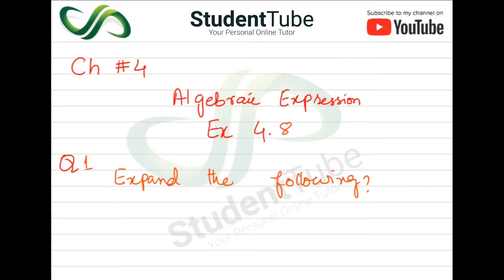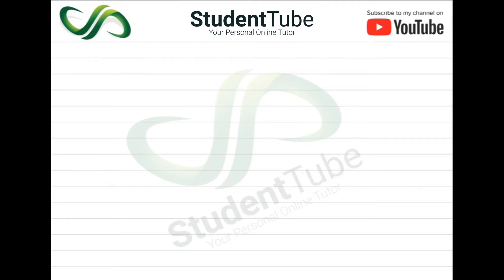Let's start. In part 3, the question is 7x minus 2y minus 3z, whole square. In the last question we applied this formula. As we know, a plus b plus c whole square equals a square plus b square plus c square plus 2ab plus 2bc plus 2ac.